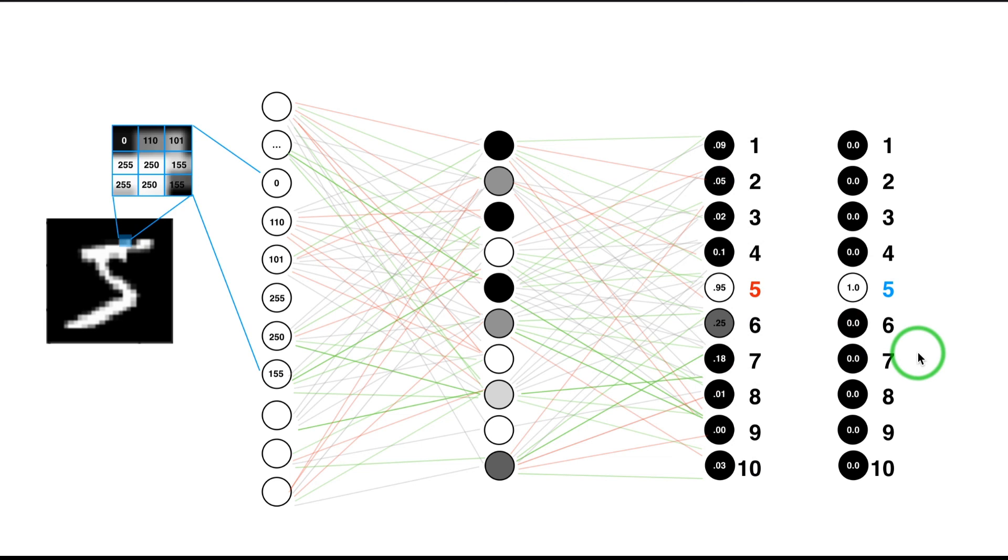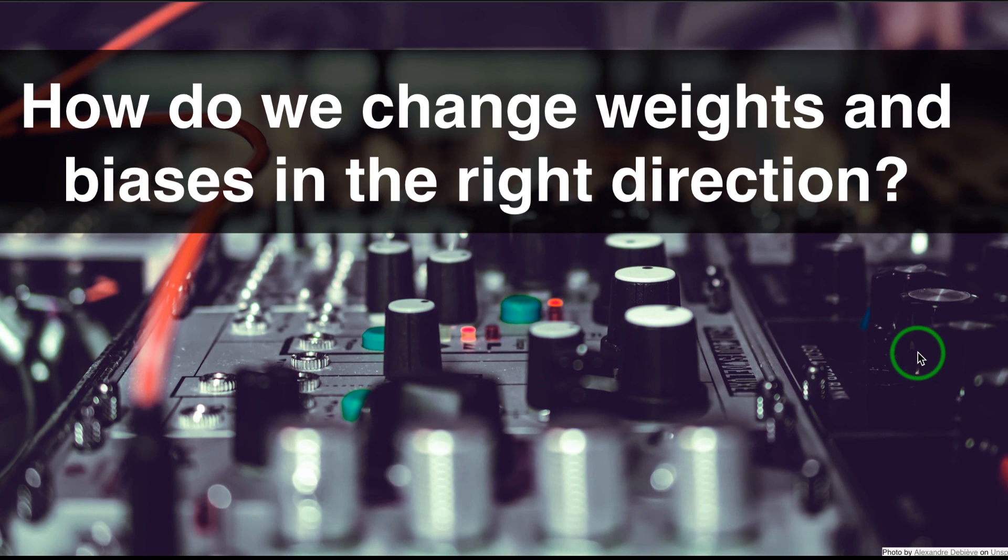But now the real question is: how do we change weights and biases so that we get what we want from the network? So what is the right direction? We already defined what a cost function looks like, but we could actually use the same representation, the same mathematical formulation, to think about the network.